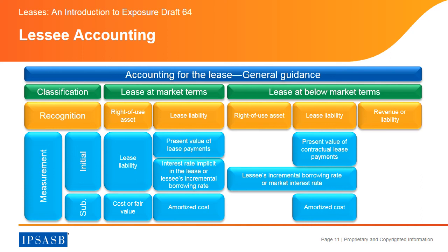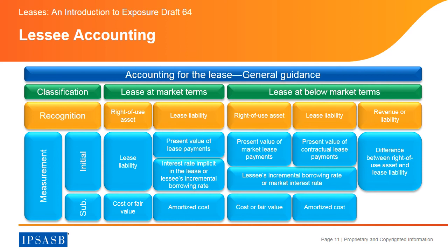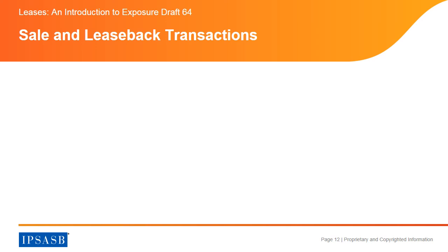Subsequently, the lease liability is measured at amortized cost. The right-of-use asset is initially measured at the present value of future market lease payments using the lessee's incremental borrowing rate, if that rate can be readily determined. If that rate cannot be readily determined, the lessee shall use market interest rates. Subsequently, the right-of-use asset is measured at cost or at fair value. The revenue or liability is initially measured by the difference between the right-of-use asset and the lease liability. Subsequently, if it is a liability, the liability is reduced as revenue is recognized in accordance with IPSAS 23, Revenue from Non-Exchange Transactions, Taxes and Transfers. Exposure Draft 64 proposes recognition exemptions for short-term leases and leases of low-value assets, for which expense is recognized on a straight-line basis over the lease term or another systematic basis.